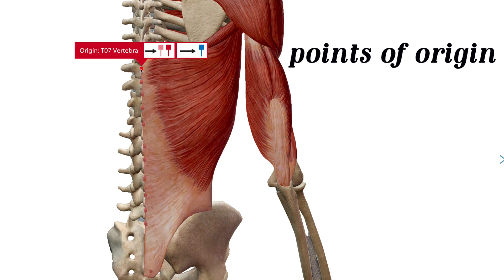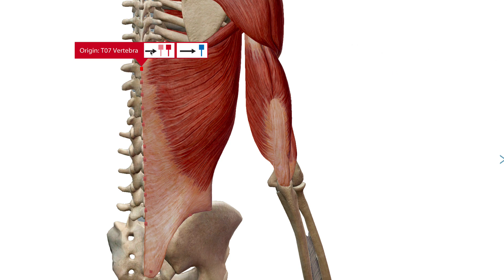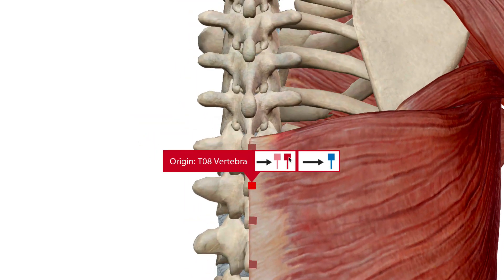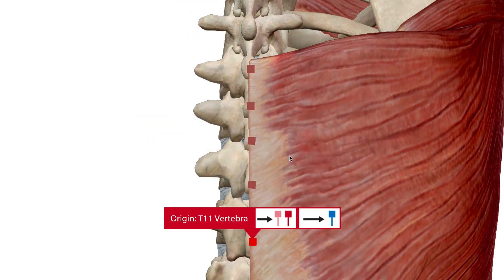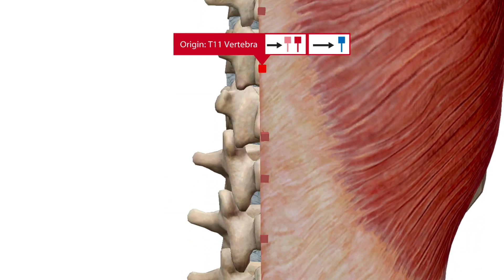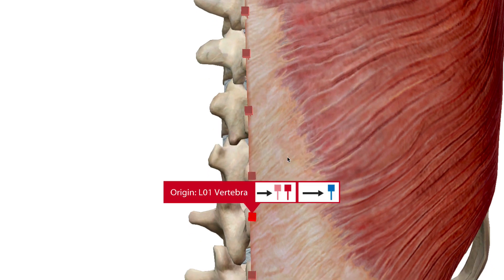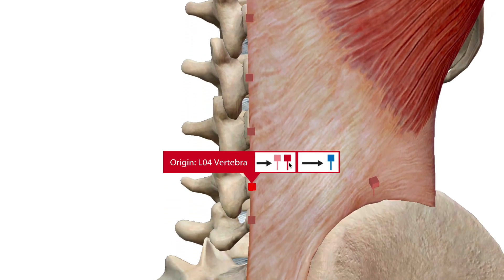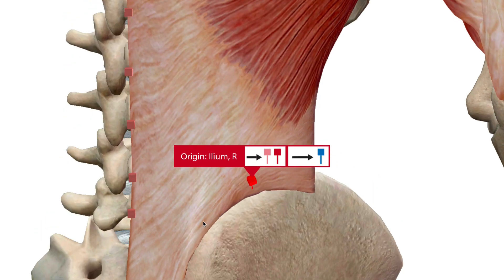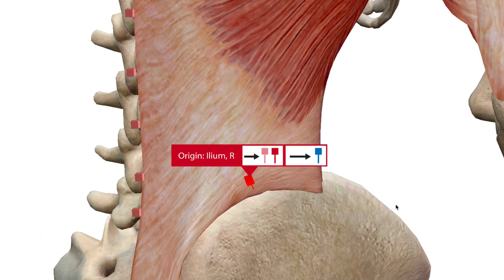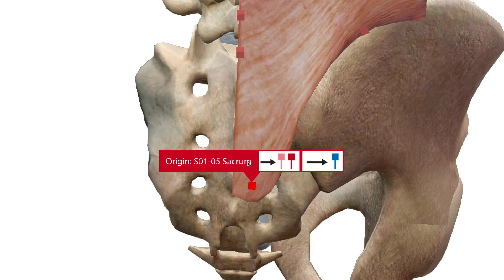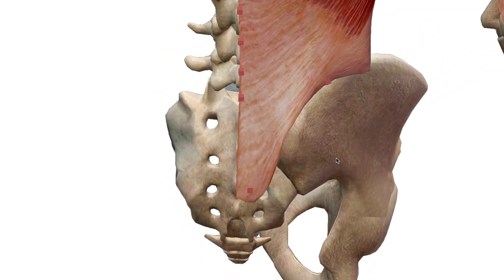The latissimus dorsi has several points of origin. Starting at T7 — the seventh thoracic vertebra — it goes through T8, T9, T10, and continues down through L1, L2, L3, L4, and L5 in the lumbar region. It also attaches to the ilium — the sharp edge of the hip bone — and to the sacrum.